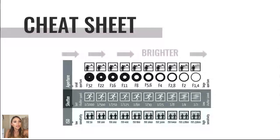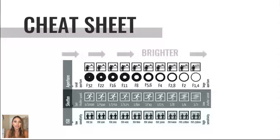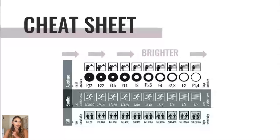You can use the cheat sheet for all three settings on your camera. One great feature SLR cameras have is priority mode — if you want to prioritize aperture to achieve a certain look, you set aperture priority mode and the camera will automatically set the shutter and ISO for you. That's a really useful thing to know.